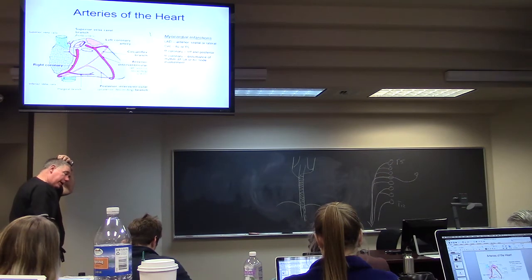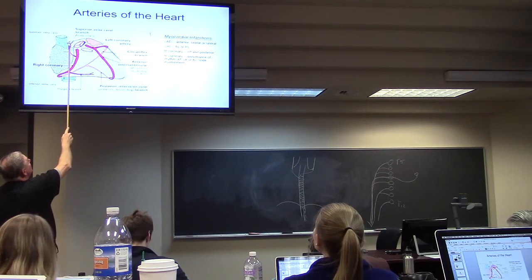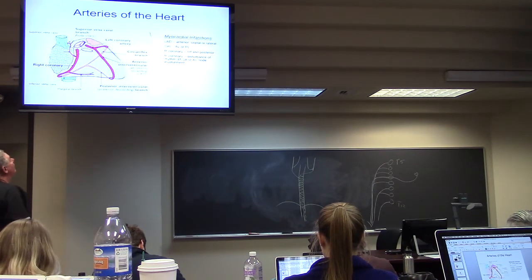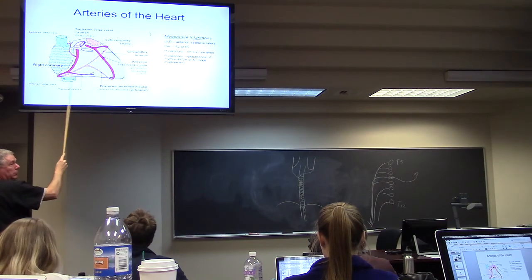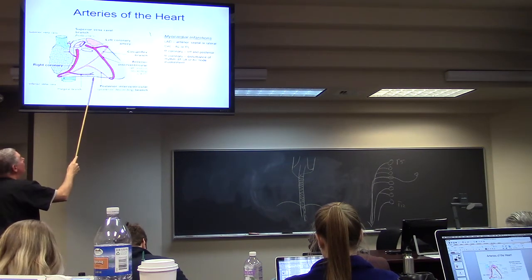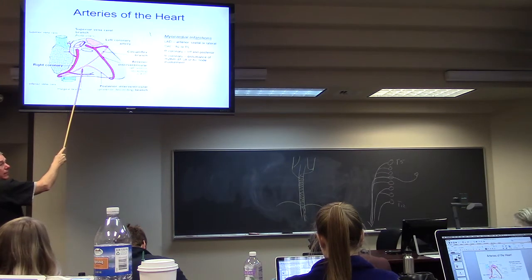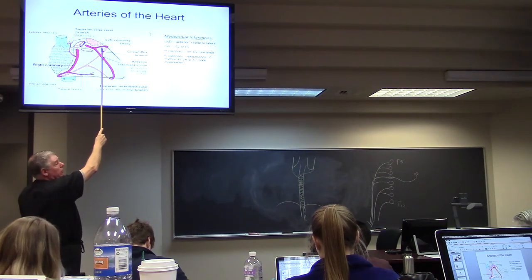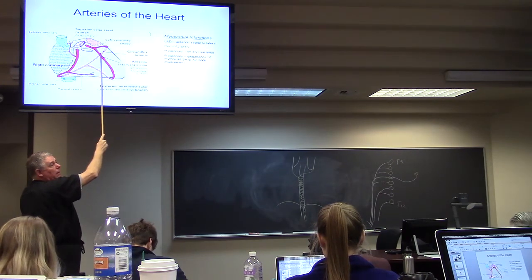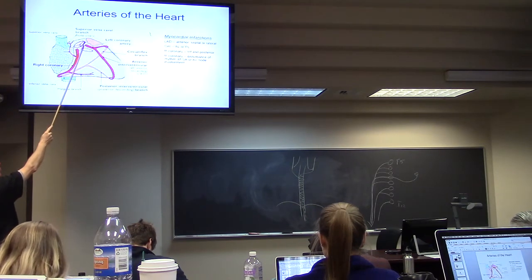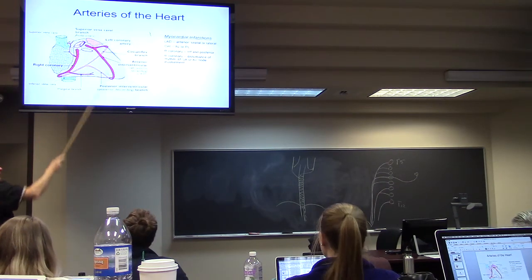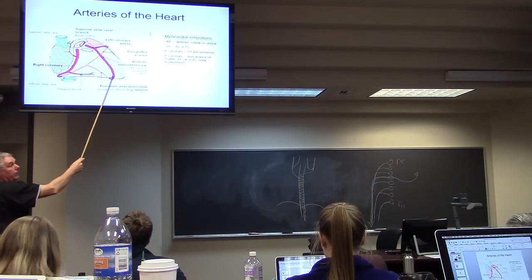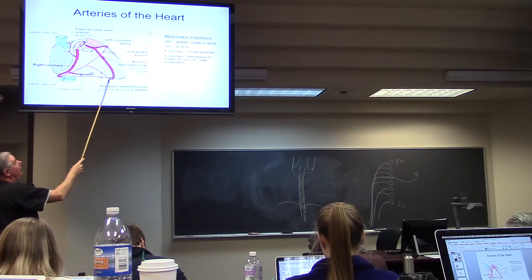Looking at the right coronary artery, there's a nodal branch — what we call a nodal artery — that supplies the SA node, the pacemaker of the heart. It continues inferiorly, gives off the right marginal, and supplies the inferior surface of the heart, then flips around to the back side. The left coronary divides into the circumflex and the LAD. It's only a short segment from the aorta to that bifurcation. The LAD travels in the anterior interventricular sulcus all the way to the apex, then flips around into the posterior interventricular sulcus.